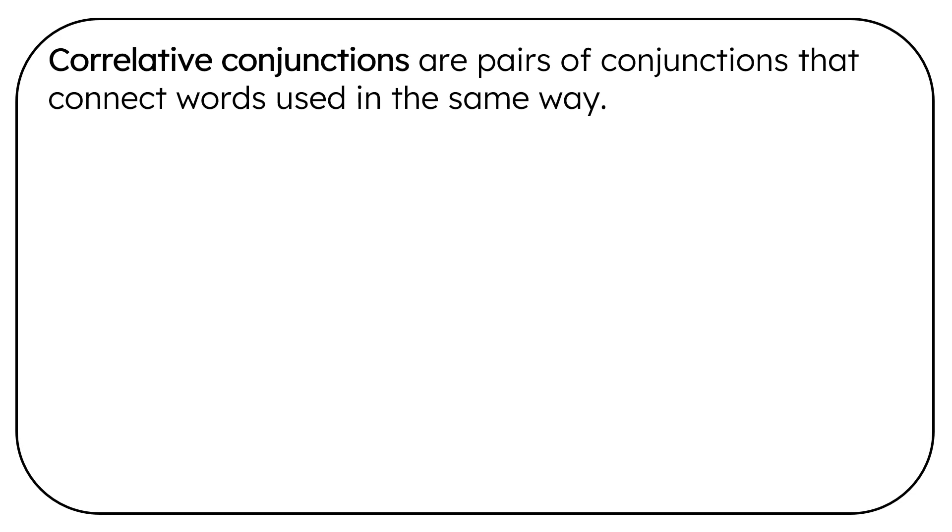Correlative conjunctions are pairs of conjunctions that connect words used in the same way. Correlate means to have a relationship.